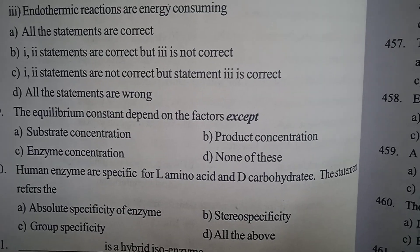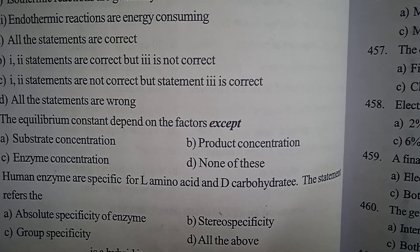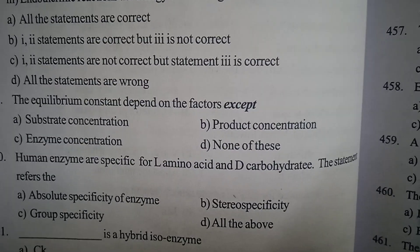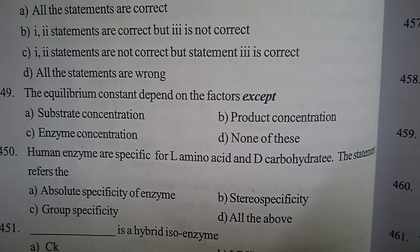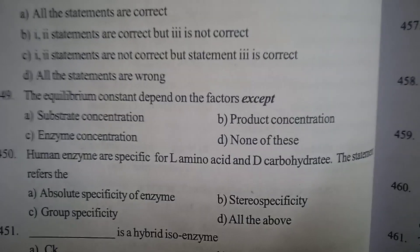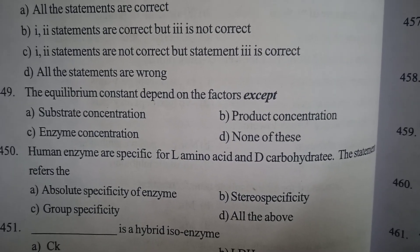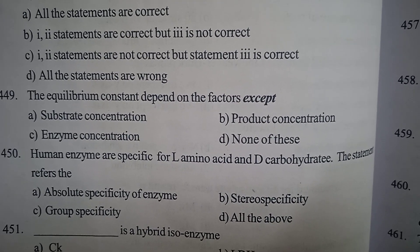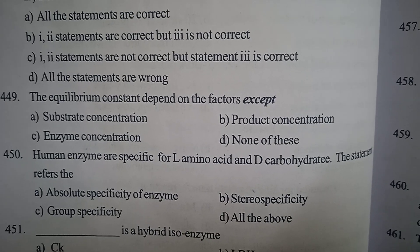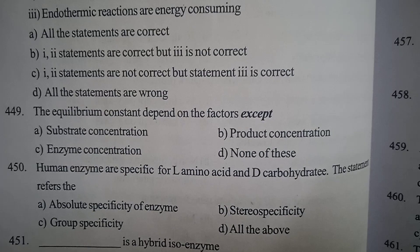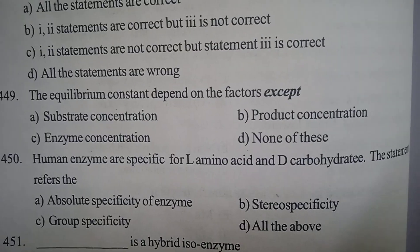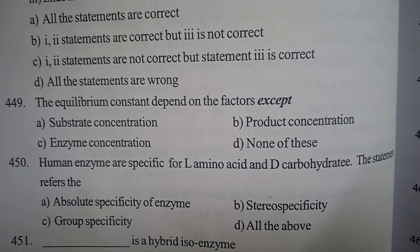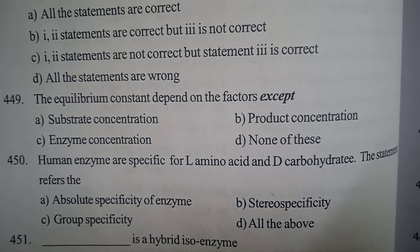Question 5: Human enzymes are specific for L-amino acid and D-carbohydrate. The statement refers to — Option A: Absolute specificity of enzyme, Option B: Stereo specificity, Option C: Group specificity, Option D: All the above. Correct answer: Option B, Stereo specificity. Human enzymes being specific for L-amino acids and D-carbohydrates refers to stereo specificity.